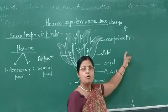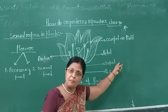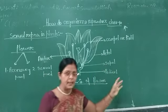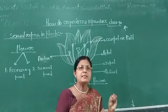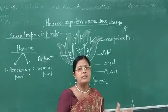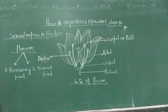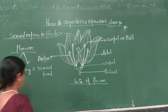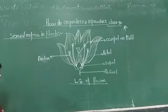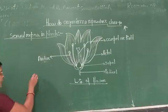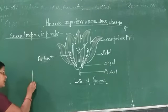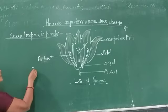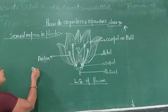Now we see the structure of the anther and carpel. Carpel is also known as pistil. Carpel is the female sex organ of the flower. The elongated structure is called the anther.